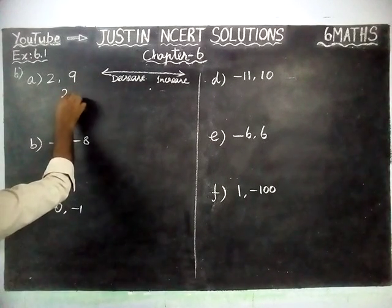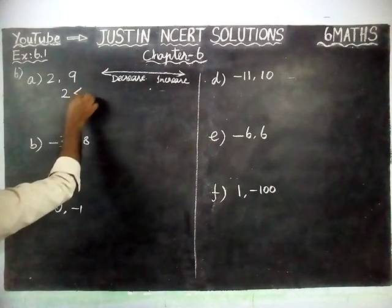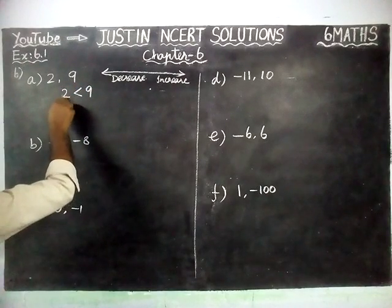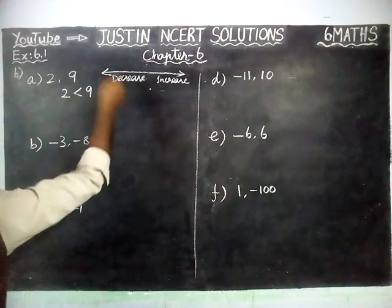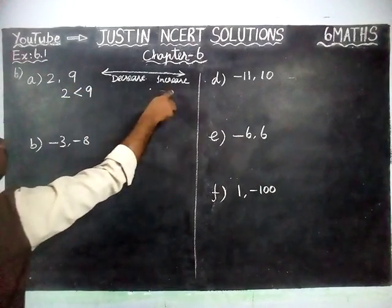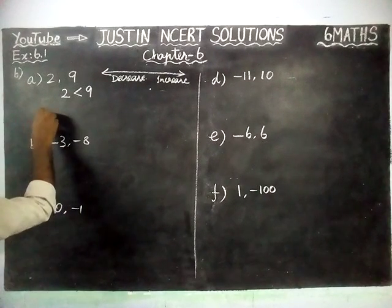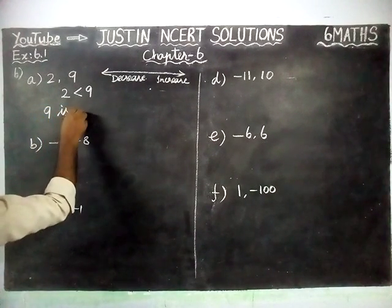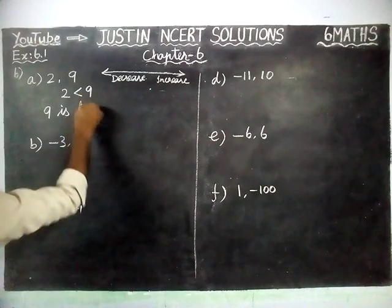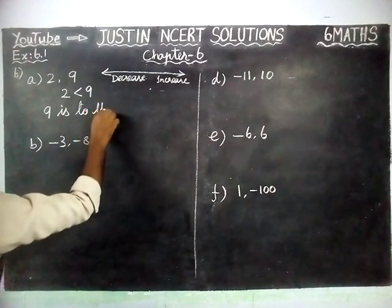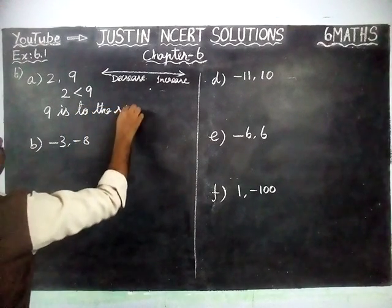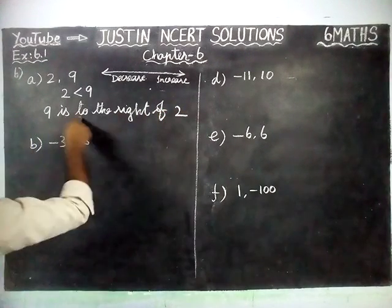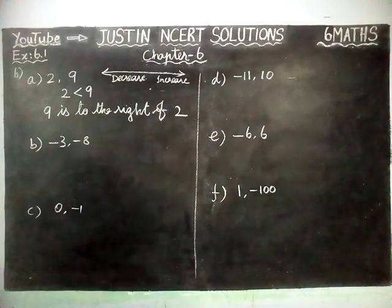Here, 2 is less than 9. 2 is the smallest number, so that number will come on the left hand side. 9 will come on the right hand side. Therefore, 9 is to the right of 2.